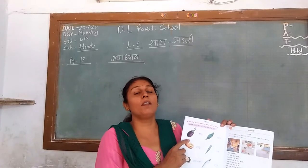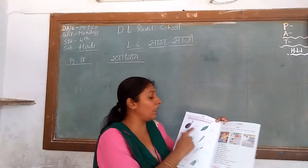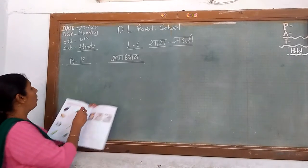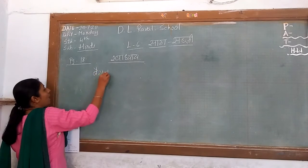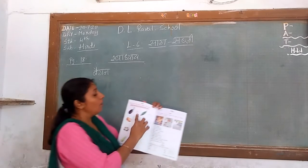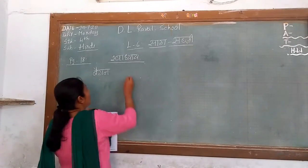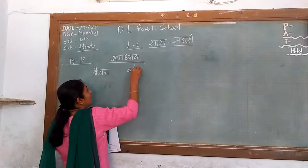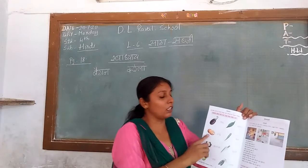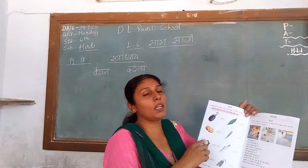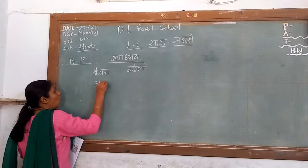According to the pictures, we will write the names. Number 1 is a picture of Brinjal — that is Baingan. Next picture is Bitter Gourd — that is Karela. Next is a picture of Potato — that is Alu.